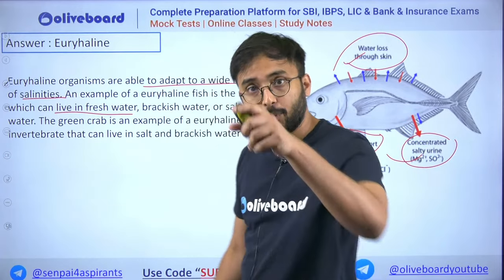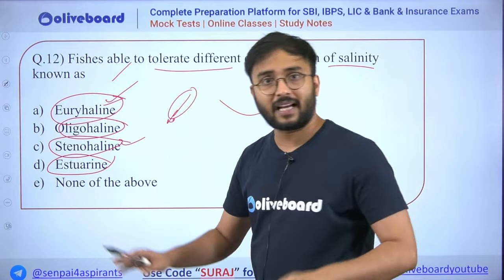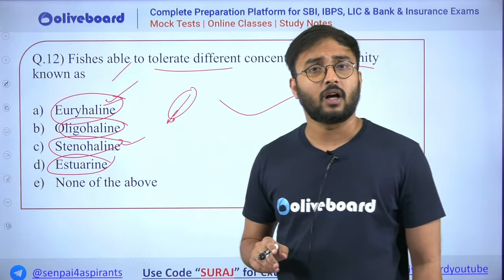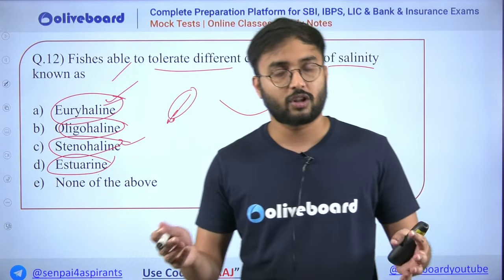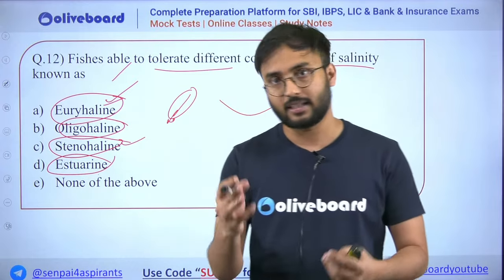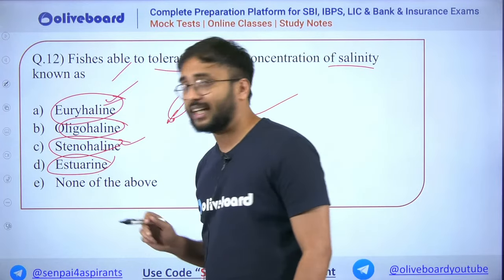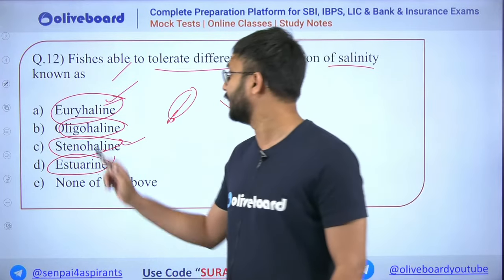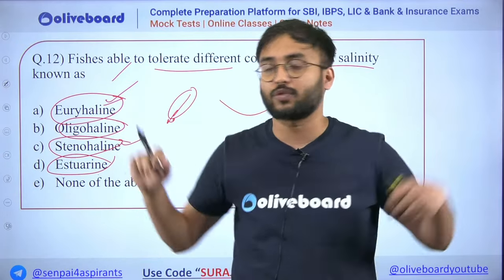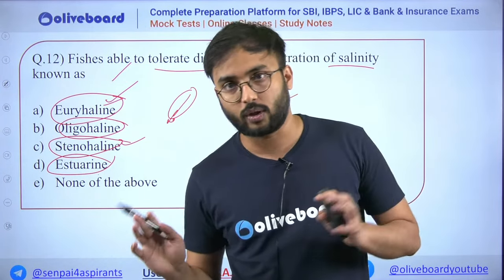Asurine means a mix of saline and river water. Stenohaline = narrow range of salinity. Euryhaline = very wide range of salinity. Oligohaline = both fresh and slightly saline.